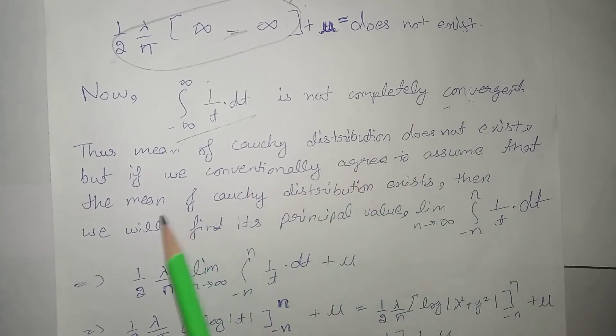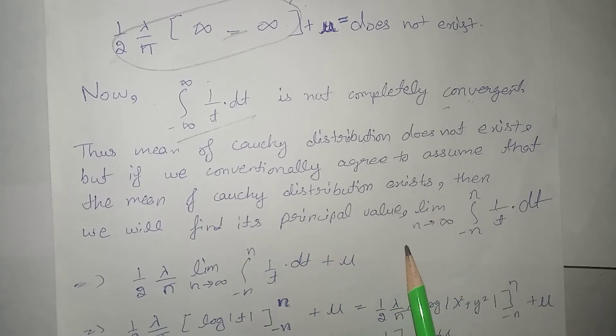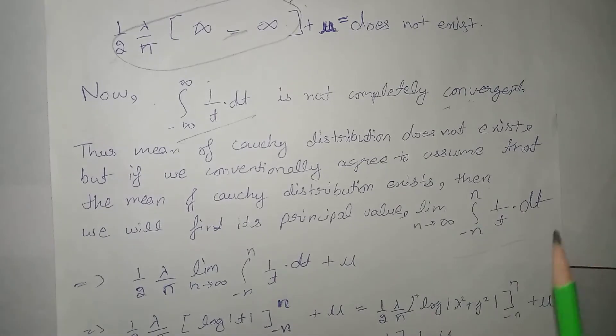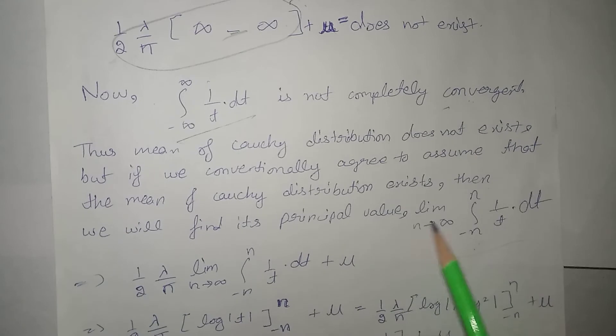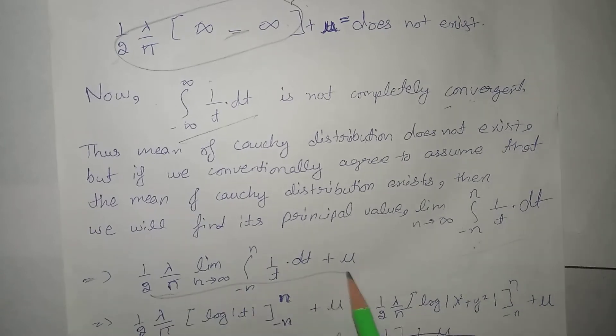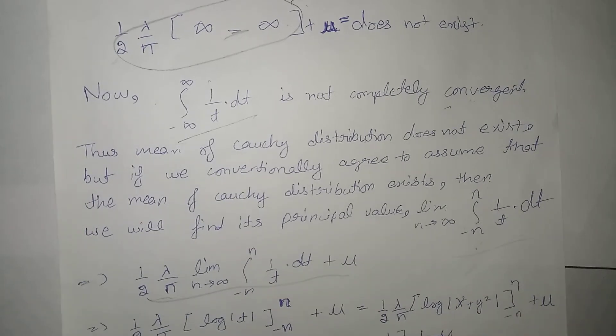But, if we conventionally agree to assume that mean of Cauchy distribution exists, then, we will find the principal value of that integral. That is, basically, hum yeh hamper limits infinity infinity put kar denge, yeh hamper n go infinity approach kar denge. That is, basically, wahi same baat hi hai. So, humne wahi kiya. Yeh hamper principal value likhi, us integral ki, jo humara convergent nahin tha.